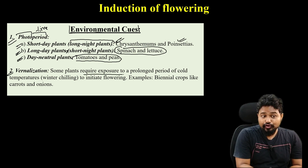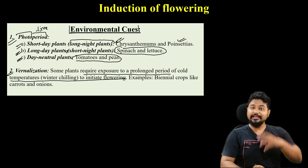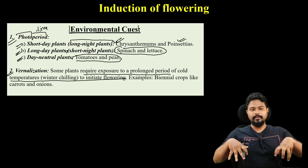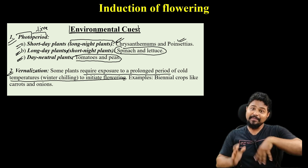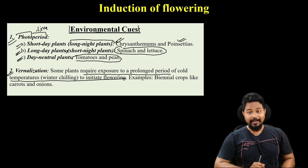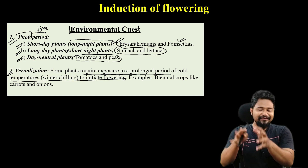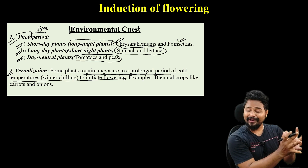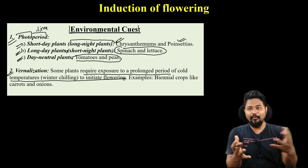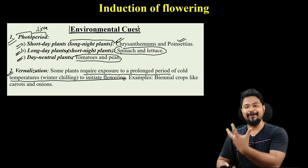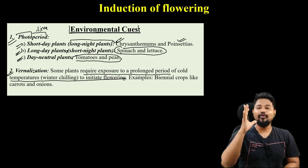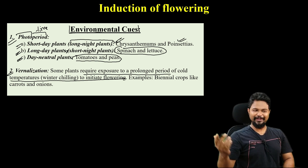Some plants require exposure to a prolonged period of cold temperature — winter chilling — to initiate flowering. There are plants that need a cold treatment before they can flower. For example, you take a plant, give it an artificial cold treatment in a freezer, then remove it from the cold. After removing from the cold, the plant will start to flower.